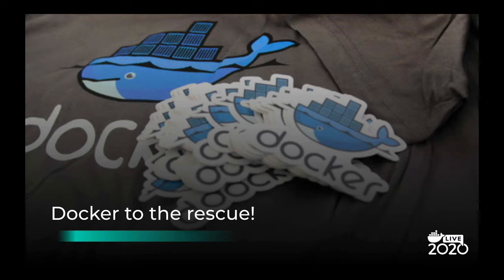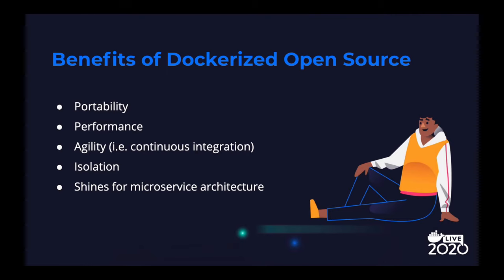Docker can solve many of the problems mentioned above. Docker is portable, so anyone who has Docker can reproduce the sharer's result without worrying about the underlying runtime environment. Performance is reasonably good, and Docker also gives you agility — you can deploy an application many times a day and productionize right away without changing much from the local environment. Docker isolates resources quite well, so it's fine to run several Docker containers on the same cloud or machine. Lastly, microservice architecture can be implemented intuitively by containerizing and connecting many small images.